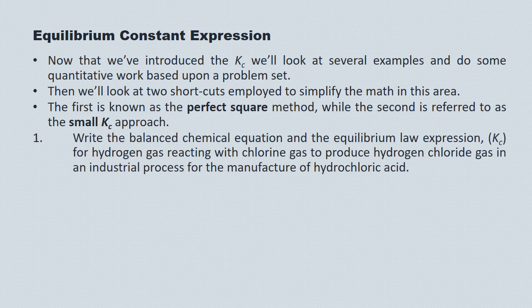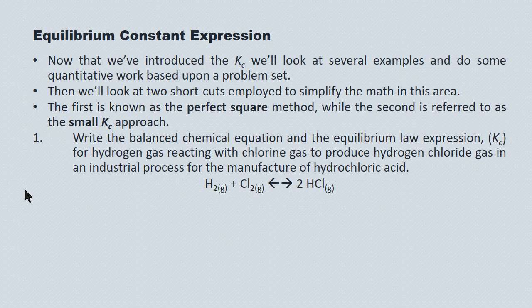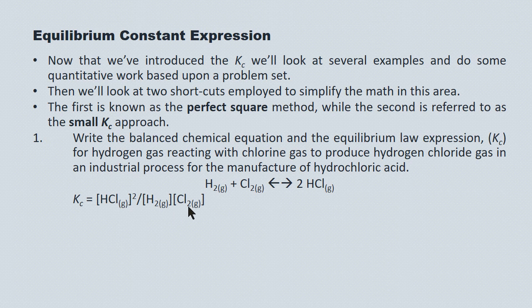First, let's derive some Kc expressions. Here's the chemical equation and the equilibrium law expression for hydrogen gas reacting with chlorine gas to produce hydrogen chloride gas. One mole of H2 reacting with one mole of Cl2 is in equilibrium with two moles of HCl gas. The Kc expression is the concentration of the products raised to their coefficients divided by the concentration of reactants raised to their coefficients — in this case, [HCl]² divided by [H2] times [Cl2].